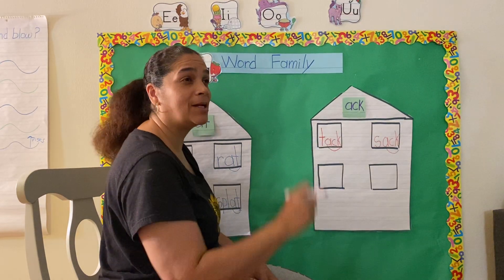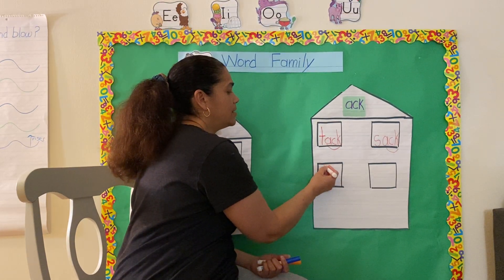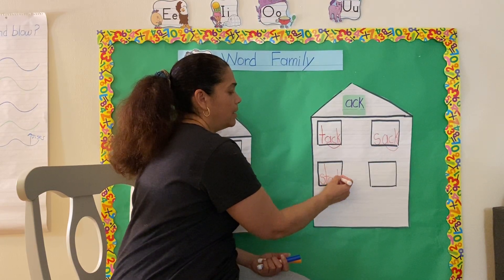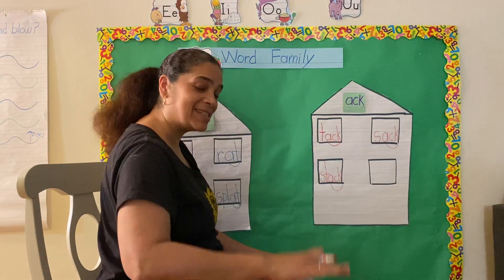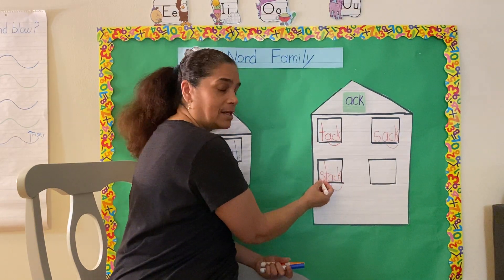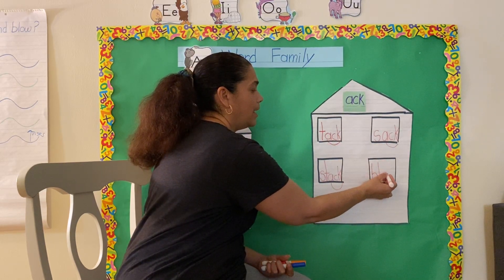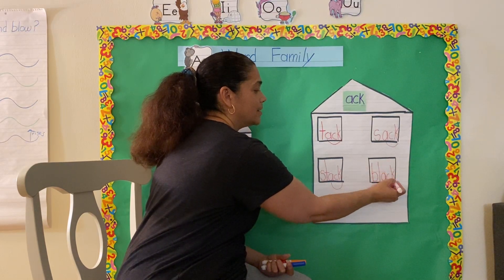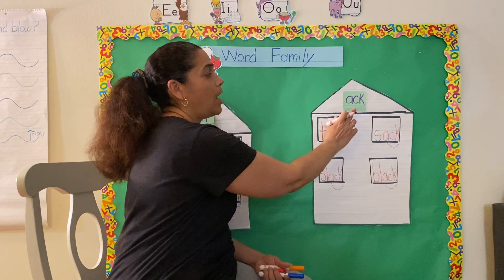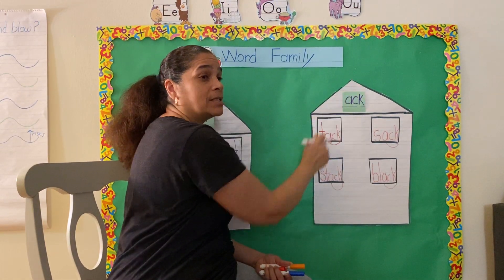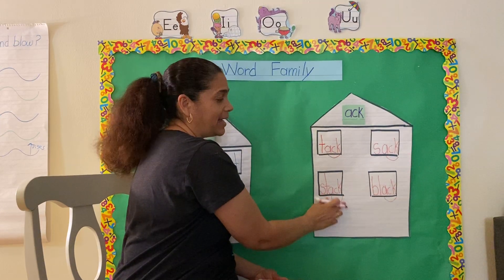Let's try those blends. Who can call out a blend? Let's use our S-T blend. And I can hear some of you saying stack — stack! Yes, a stack of blocks. Stack. This one is going to have another blend, and it's a color word. Black! Very good. Black. So our second word family or second pattern today is -ack: A-C-K. Tack, sack, stack, black.